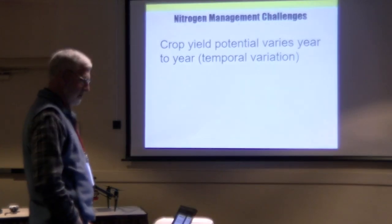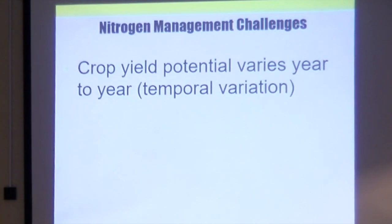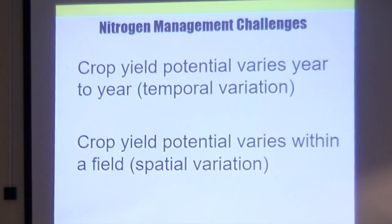There are multiple challenges in determining how much nitrogen to supply for each acre of corn. Overall growing conditions can vary from year to year, and we're dryland, so whether it rains or doesn't rain is a very important factor in what kind of yields we can raise. In addition to yield potential within the field, topography, soil types, fertility, and rainfall are all going to play a factor in addition to overall weather.